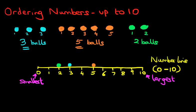Now which is the smallest amount? Well, we know which is the smallest amount — it's the one which is closest to zero. Which one is closest to zero? It's this one — it's the green balls. After that, it is the blue balls, and then the orange balls.